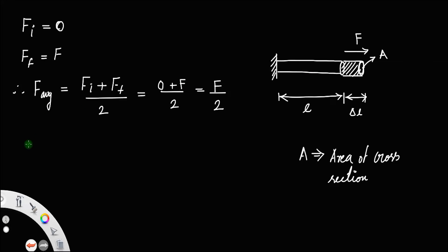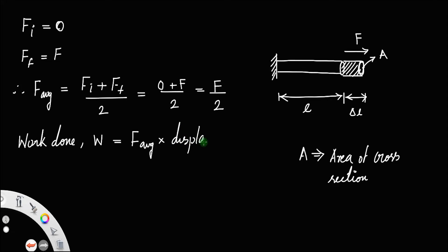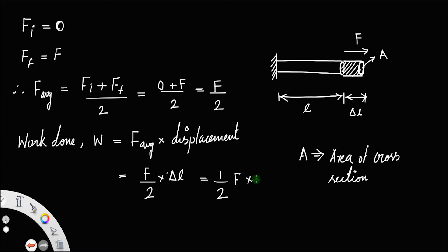The work done by this force equals average force into displacement. We have average force as F by 2 and displacement is the extension of the rod delta L, so the work done is half F into delta L.